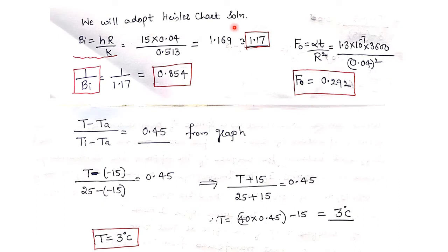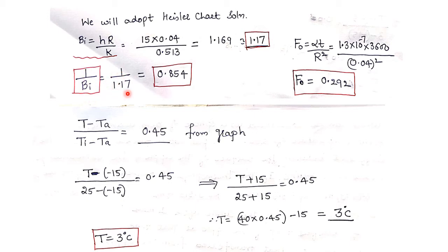When using the Heisler charts, the Biot number is given by h into r divided by k — the characteristic length Lc is replaced by r. So Biot number equals 15 into 0.04 divided by 0.513, which gives approximately 1.17. For reading the graphs, we need 1 divided by Biot number, which is 1 divided by 1.17, giving 0.854.